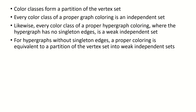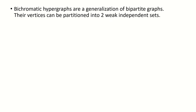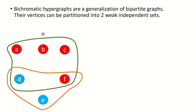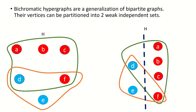This helps us generalize bipartite graphs to bichromatic hypergraphs, which are hypergraphs with chromatic number 2. If a hypergraph is bichromatic, such as our first example, then we can partition its vertices into two weak independent sets. This is similar to how, if a graph is bipartite, its vertices have a partition into two independent sets. If our hypergraph has no edges of size less than 2, such as the one shown here, then pictorially we can arrange the vertices into two columns, each column being one of the color classes, and there will be no edge that's entirely within one of the columns.